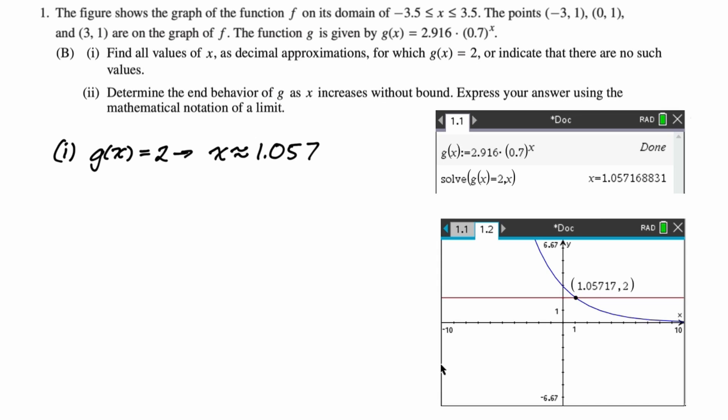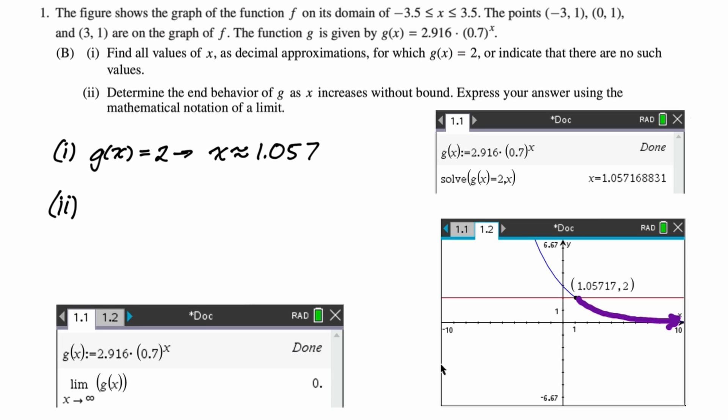The next part, determine the end behavior of g as x increases without bound. Express your answer using the mathematical notation of a limit. So I think all you need to do is write a limit here. I know that in the practice things, they sometimes write out some other additional stuff, but let's see. You can see from the graph, as x increases without bound, the y values or the outputs of the function are approaching zero. Or you could literally just use the limit template and see that the limit as x approaches infinity of g of x is zero. What's nice about the limit template is it also shows you exactly how you should write your answer. So that's our answer to part two.